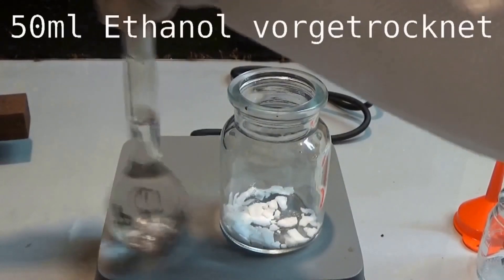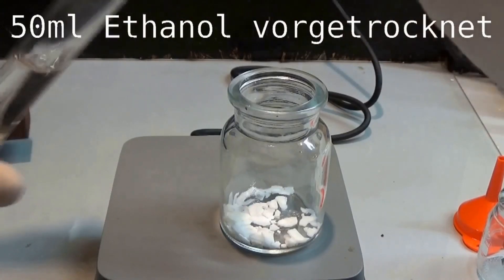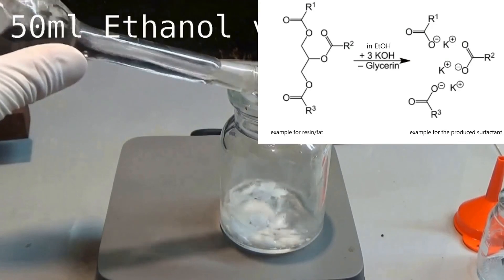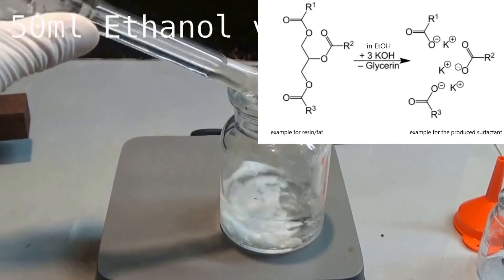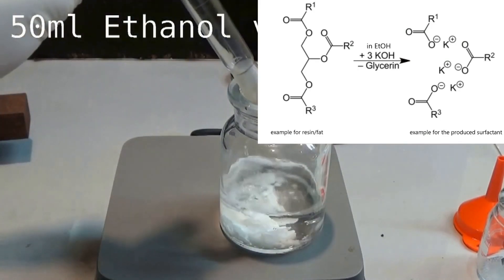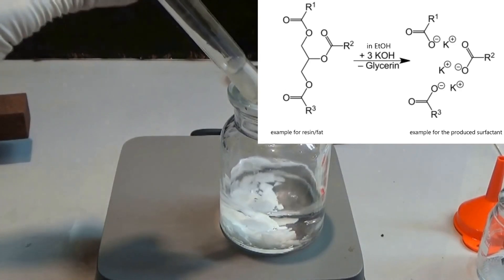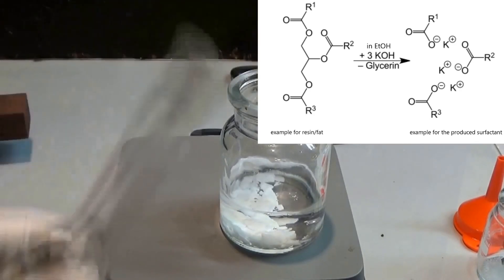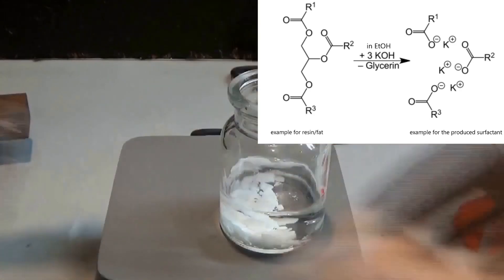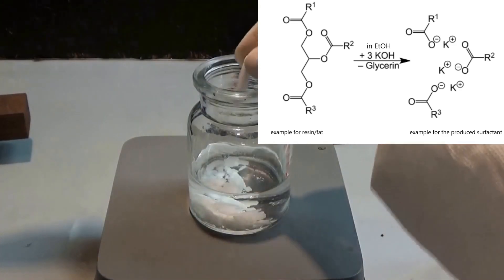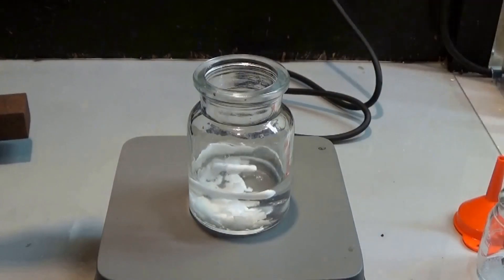The potassium hydroxide solution is used to get rid of most of the resin and fat which we extracted alongside our wanted piperine. The process is very simple and works just like the production of soap. In our case, the hydroxide ions react with the ester bonds in the resin and fat to break them up and form water soluble salts. These are commonly known as surfactants and are better soluble in water than in the used ethanol, which leads to some of them crashing out of solution.